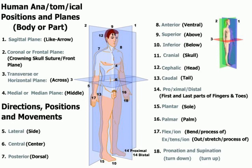Number eighteen is pronation and supination. When you pronate something, you turn it down — like the body in a downward position or the hand in a downward position. Supination is turning something up, like the body in a face-up position or supinating the palm of the hand, turning it up.